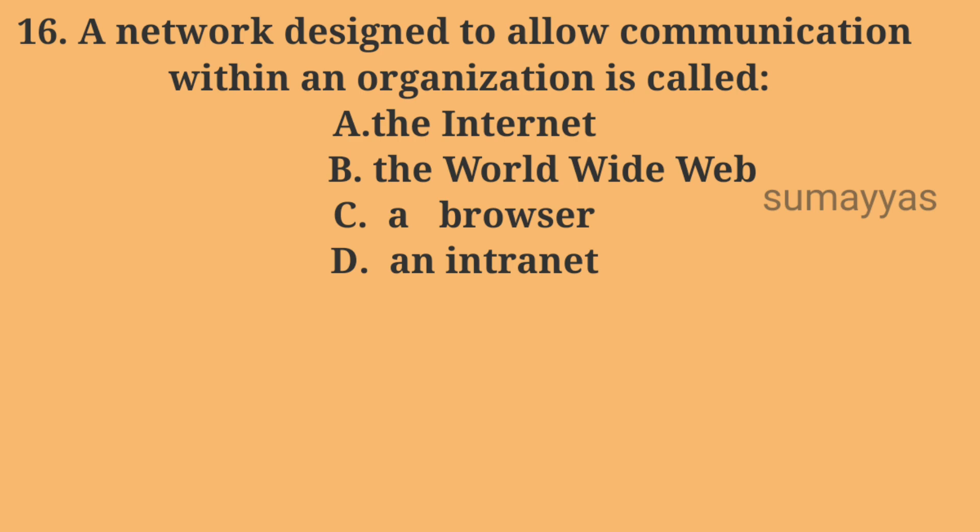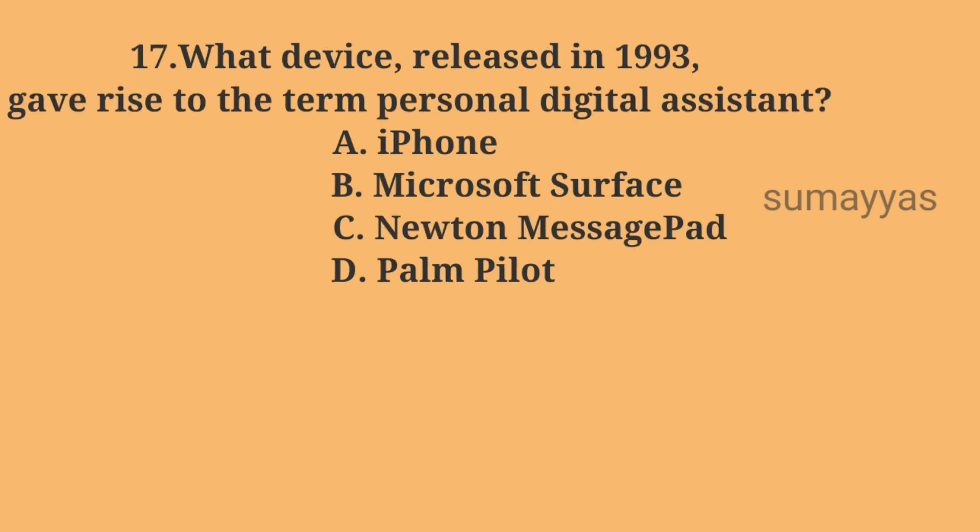Next question: a network designed to allow communication within an organization is called — Option A: The Internet. Option B: The World Wide Web. Option C: A Browser. Option D: An Intranet. The correct answer is Option D: An Intranet.